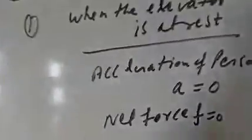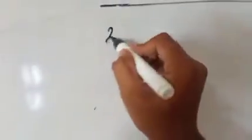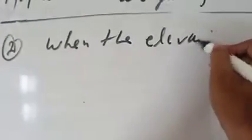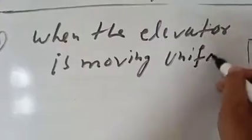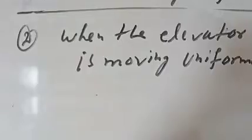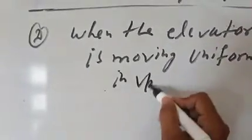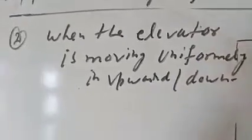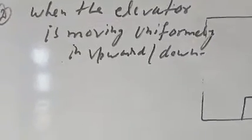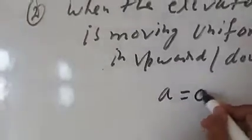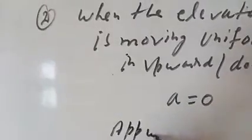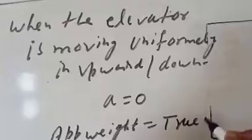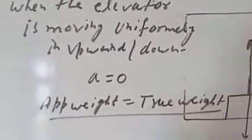Second case: when the elevator is moving uniformly — either upward or downward. Uniform motion means acceleration is zero. If it moves uniformly upward or downward, acceleration is zero, and the apparent weight will be equal to the true weight, same as the first case.